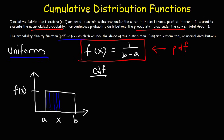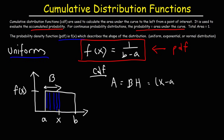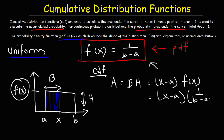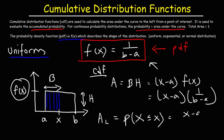This is basically the shape of a rectangle. The area of a rectangle is base times height. The base is the difference between x and a, so it's x minus a. The height is f(x), and f(x) is 1 over b minus a. So the CDF, the cumulative distribution function, will give us the area to the left. The probability that the random variable X is less than or equal to some number is going to be x minus a over b minus a. This function highlighted in blue is the CDF.